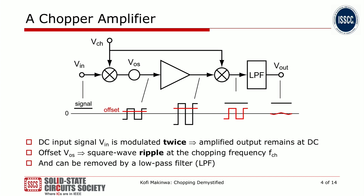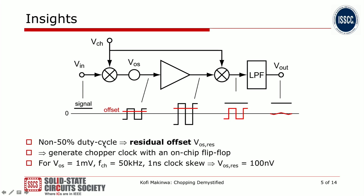Looking at this block diagram, we can already make a few interesting observations. First, if the chopping duty cycle is not exactly 50%, there's going to be some residual offset, because this red square wave is going to have a DC component. So it's important that the chopping waveform have an exact 50% duty cycle, and the way we do this is usually by using an on-chip flip-flop. To give you some numbers: if the offset of the amplifier was 1 mV, and we are chopping it at 50 kHz, and there's just one nanosecond of clock skew, that will give us a residual offset of 100 nV. So it's something to pay attention to.